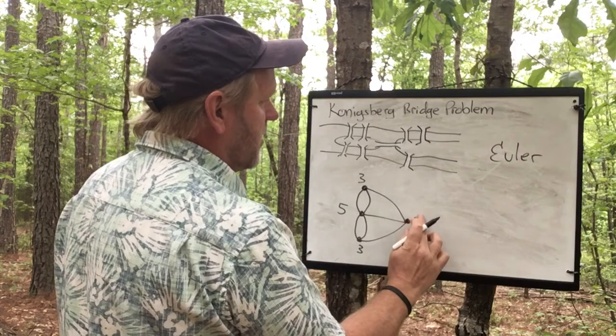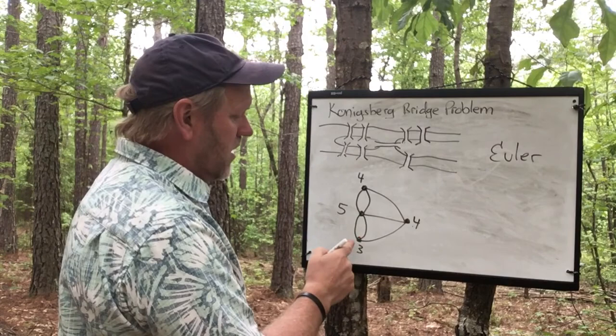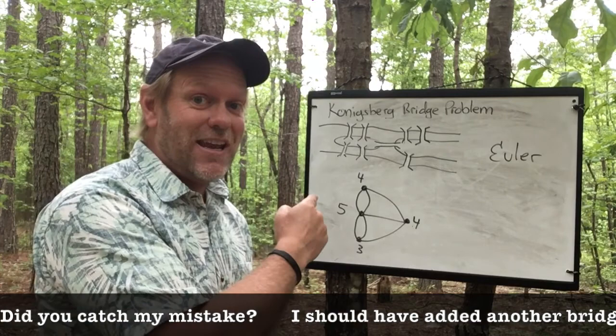For instance, if we take and put another bridge here, this now becomes one, two, three, four — and this one becomes four. Now it is possible. The other way there was no chance we could do it, but now, as long as I start here or there, I can figure out a path to do it. Sketch this down — I challenge you to see if you can figure out how Euler did it.